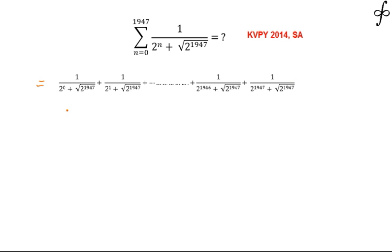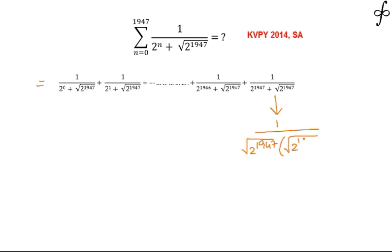Now consider the last term. Taking root 2 to the power 1947 as common, it becomes root 2 to the power 1947 times (1 plus 1), where that 1 can be written as 2 to the power 0.